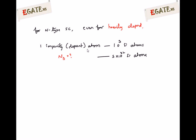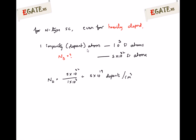That calculation gives us the doping concentration. The number of dopants is indicated as ND for N-type, because every impurity atom donates one extra electron — so they are called donors. ND = 5×10²² / 1×10³ = 5×10¹⁹ dopants per centimeter cube.